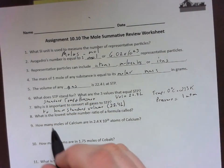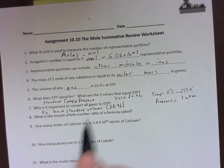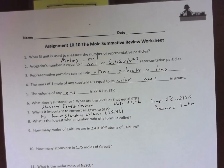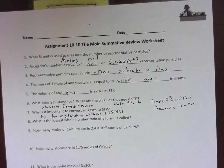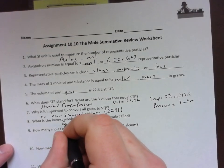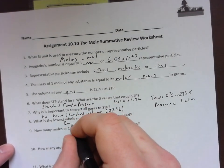The lowest whole number ratio of a formula is based on that empirical formula. Remember, empirical is spelled with an E when we're talking about empirical formula.